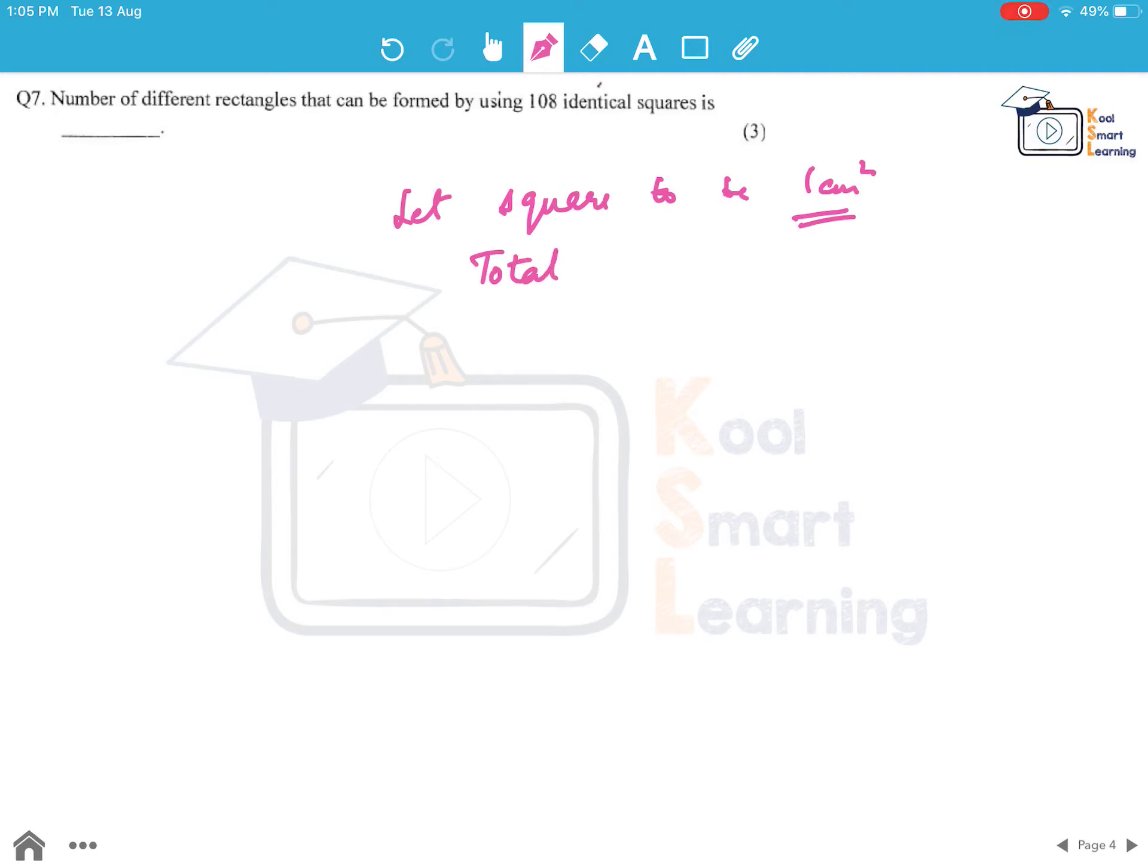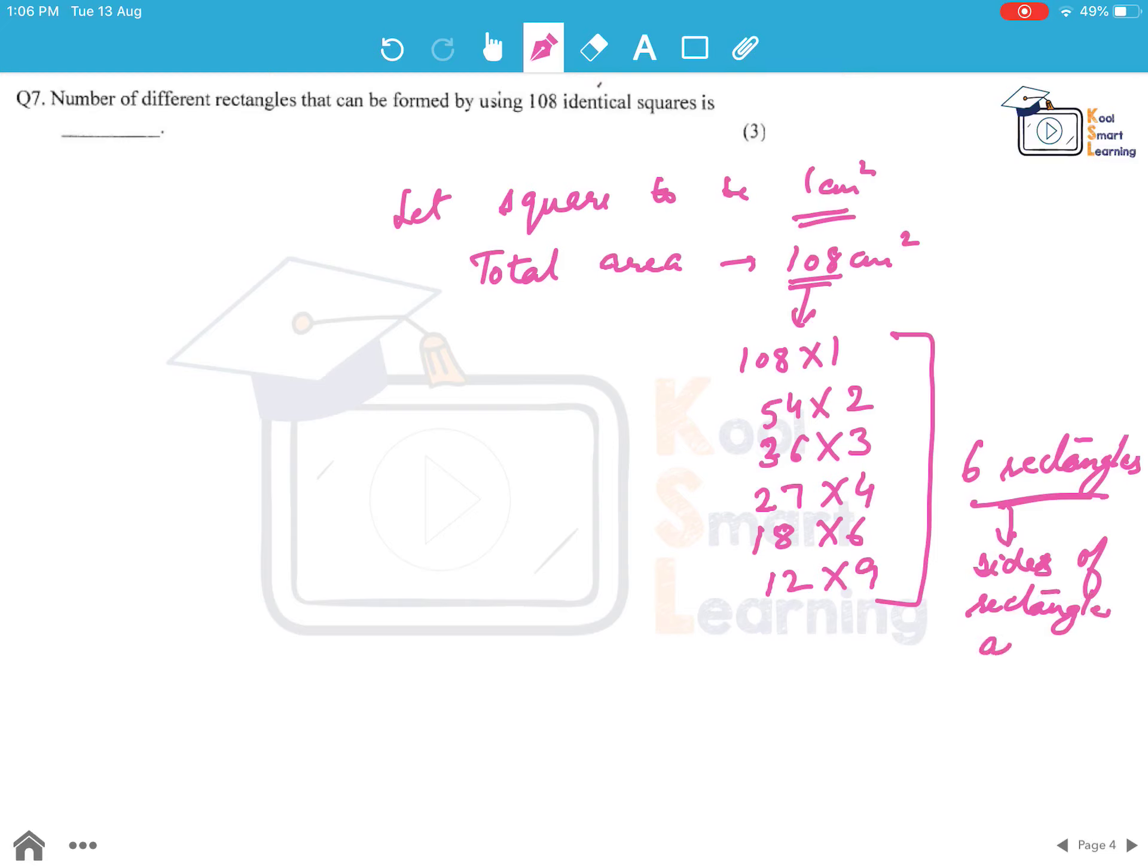So this means the total area that we have is 108 cm square. Now if we can write it as a product of 2 numbers we can write it as 108 into 1, we can write it as 54 into 2, we can write it as 36 into 3, we can write it as 27 into 4, we can write it as 18 into 6, we can write it as 12 into 9. So we have this 6 options of the rectangles but we are saying 6 only if we have sides of rectangle as integer. So with integer sides of the rectangle these are the 6 options that are possible so we can make a maximum of 6 different rectangles.